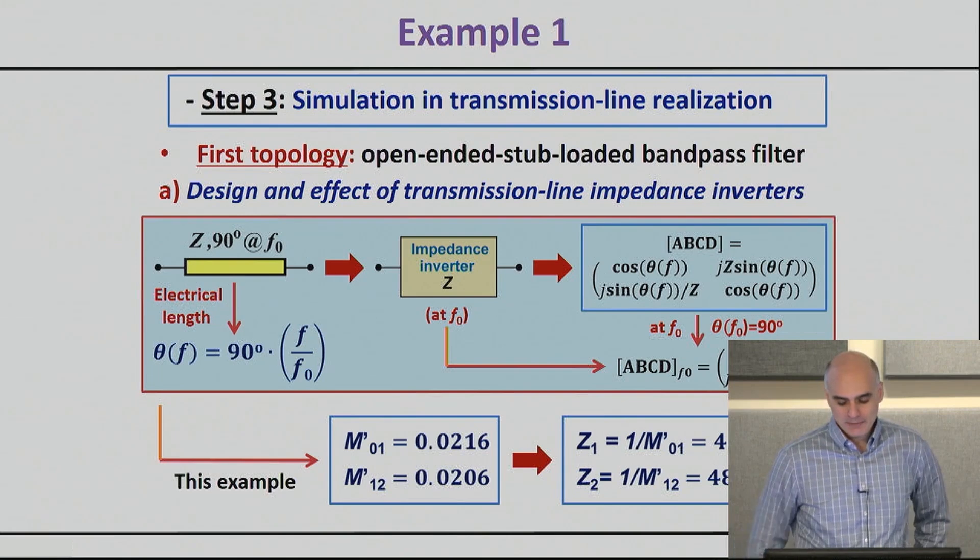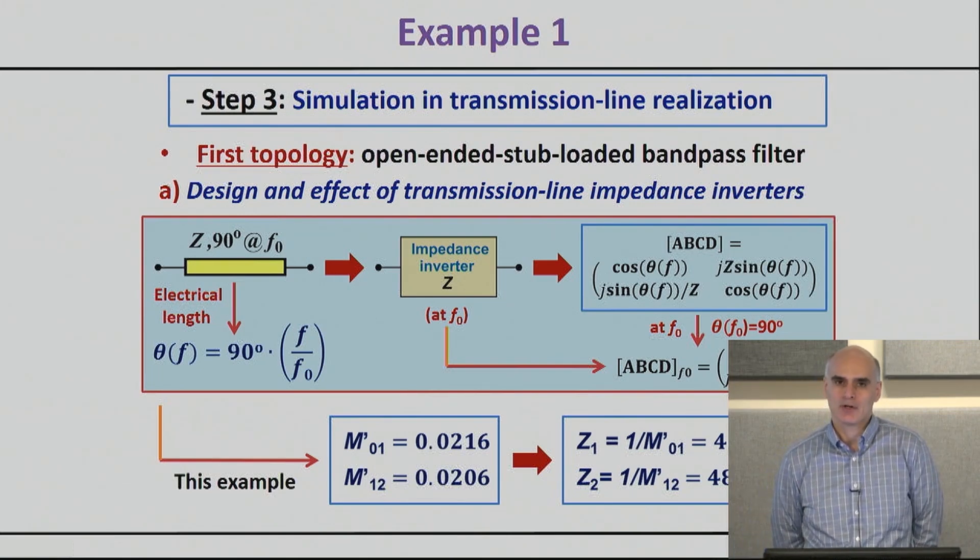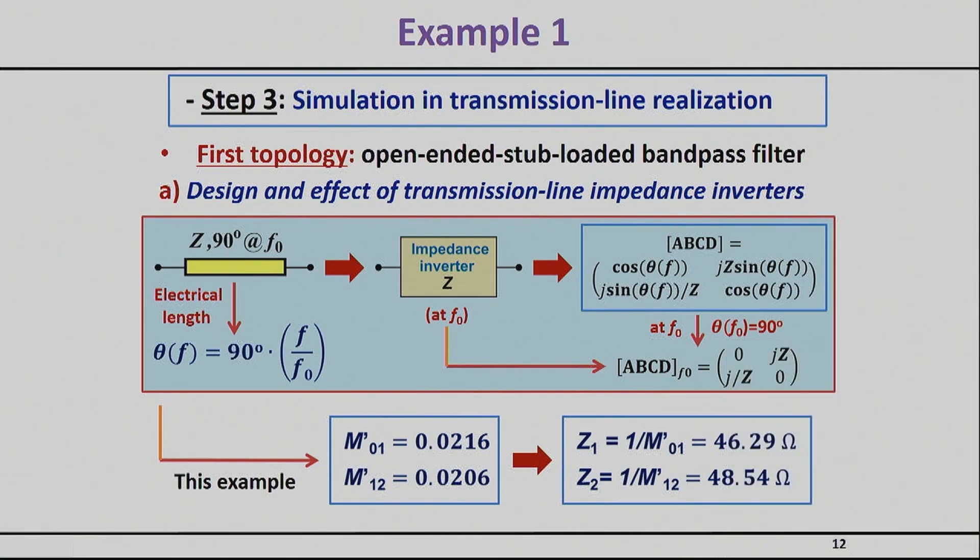All right, so once we made that choice, once we make this technology choice, now it's time to calculate things. The way you calculate the impedance value is by essentially matching the ABCD matrix of the 90 degree line to the ABCD matrix of the ideal inverter. We already know the ABCD matrix of the transmission line is shown right here. We already know the impedance inverter ABCD matrix, and at resonance they are exactly the same. That gives you that Z should be equal to K, so the impedance should be equal to the impedance inverter.